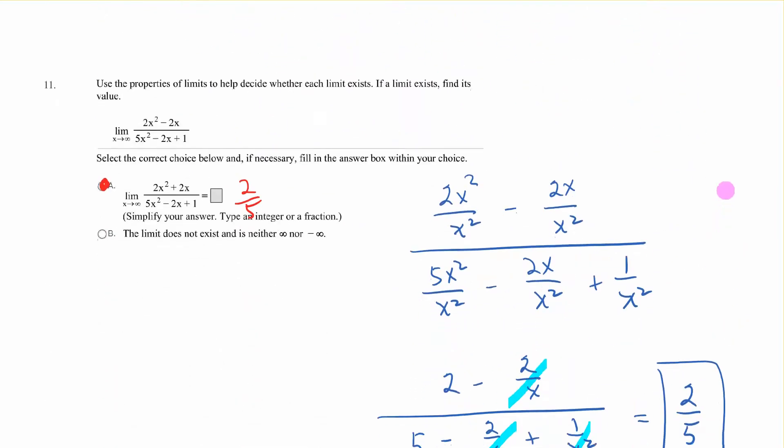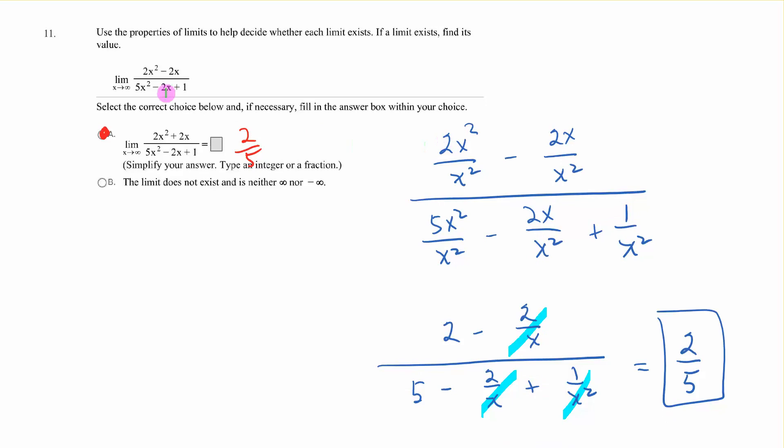Okay. Same thing here. The highest power on the bottom is x squared. So we divided every term by x squared. We get those canceling out, those canceling out. Those don't cancel out. But we can divide that one into that one. And we have 2 over x. Okay. Down here, those are gone. Same thing here. We do that and that. And we are left with 2 over x. And we have 1 over x squared. So that becomes 2 minus 0 over 5 minus 0 plus 0. So in other words, we're left with 2 fifths.